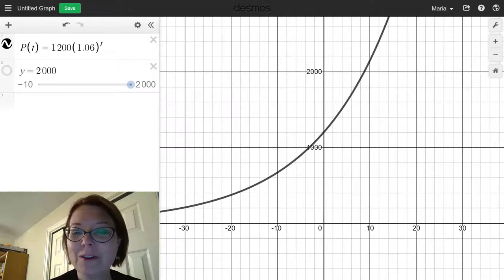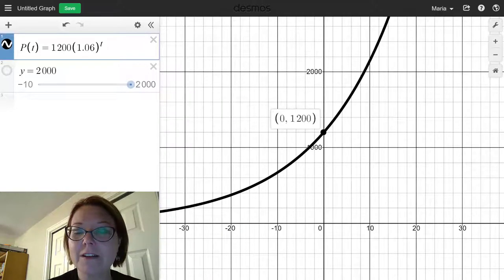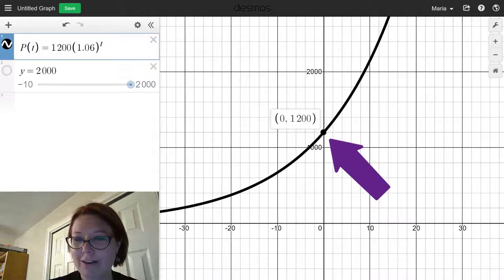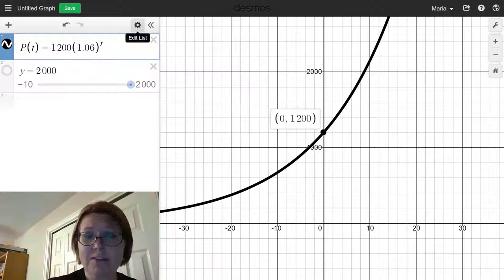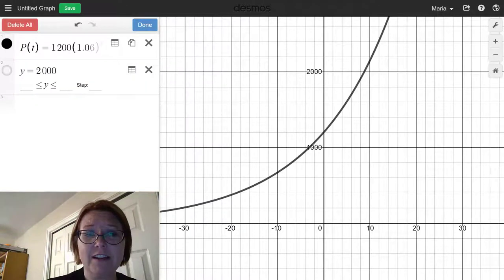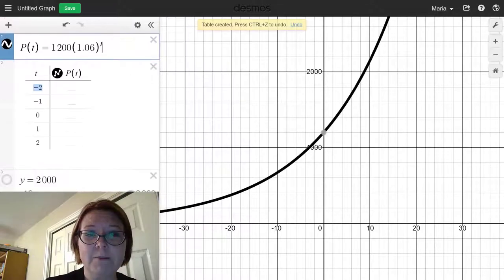Okay, so I've got a y-intercept here of (0, 1200). And certainly I can find some other points as well. You can move your cursor along the graph, but if you find that kind of difficult to do, remember that you could also just generate a table of values by clicking on the gear icon and then asking for a table of values.